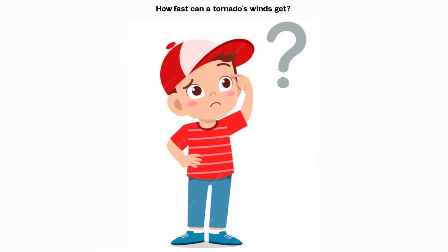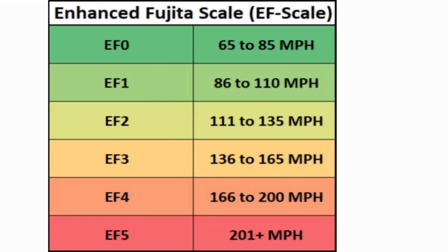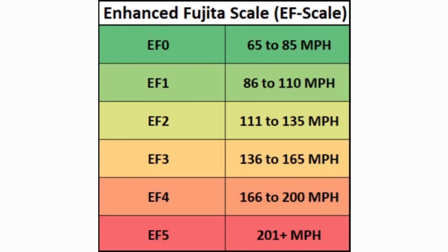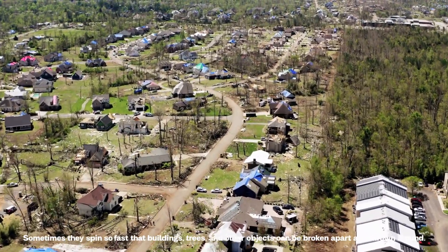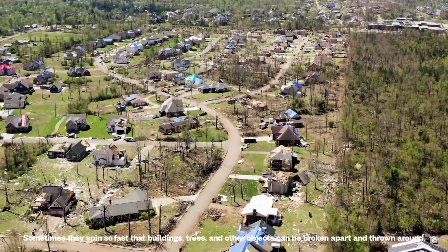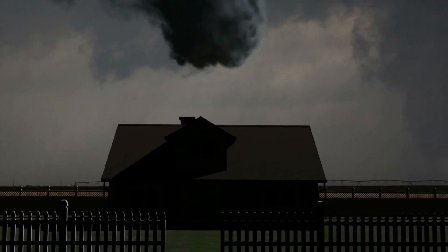How fast can tornadoes get? The Enhanced Fujita Scale is used to gauge tornado activity. The Fujita Scale, which ranges from EF0 to EF5, rates the intensity of tornadoes. EF0 tornadoes are weak and at worst do little to no damage, while EF5 tornadoes are extremely destructive and capable of wreaking havoc.